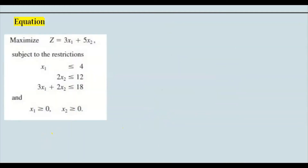Let's do an example. We're asked to find the maximum, and we're given z = 3x₁ + 5x₂. We know this is an objective function because of the equal sign. This is the equation we'll use later to find the maximum value.